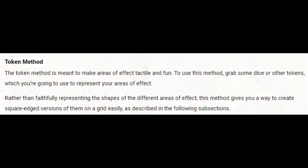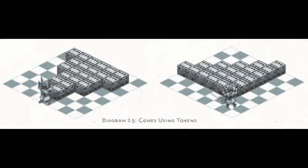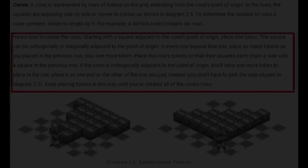So, Xanathar says the following on the token method for cones, so let's go through each portion of it. A cone is represented by rows of tokens on the grid extending from the cone's point of origin. In the rows, the squares are adjoining side-by-side or corner-to-corner, as shown in diagram 2.5. To determine the number of rows a cone contains, divide its length by 5. For example, a 30-foot cone contains 6 rows. So, we see the two examples given in the diagram, and we see the direct cone is longer, but narrower, and the diagonal cone is wider, but shorter. But in each case, exactly 21 squares are included. But those aren't your only options using these rules, though any option we choose will include the exact same number of squares affected, regardless of our choice.